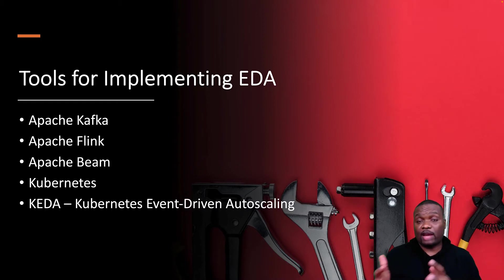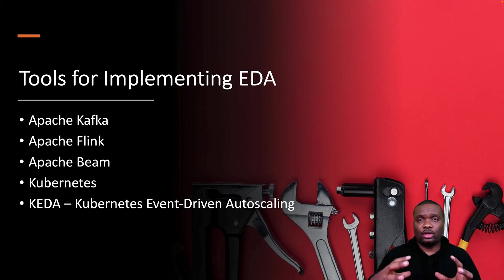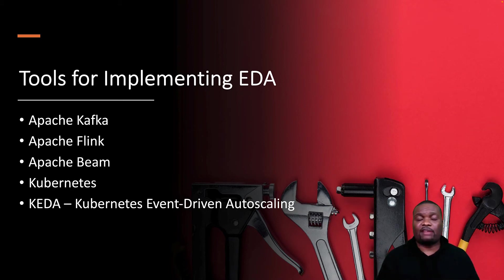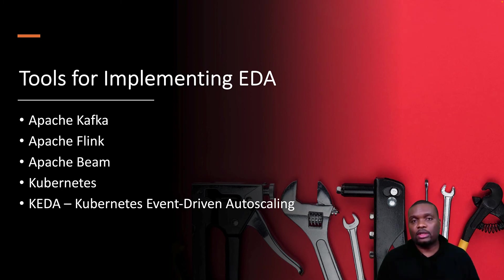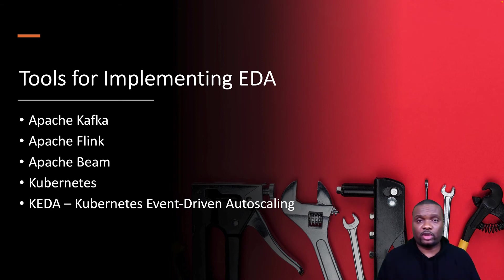Now let's look at these tools. Apache Kafka is something I like a lot because it allows you to use different ecosystem components to process events, store events, and analyze events. Kafka is one of the most mature open source products available to support event-driven architecture very effectively. There are also other open source projects that integrate very well with Apache Kafka, like Spring Boot, Apache Flink, and Apache Beam — all of them have integrations with Apache Kafka, broadening the ecosystem.